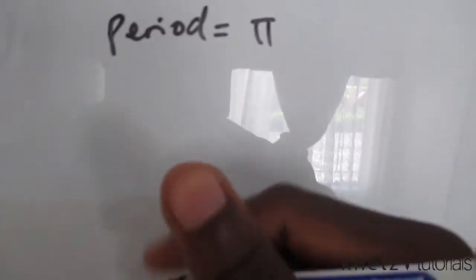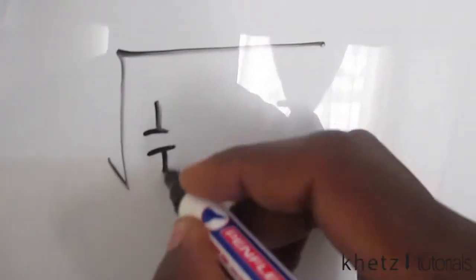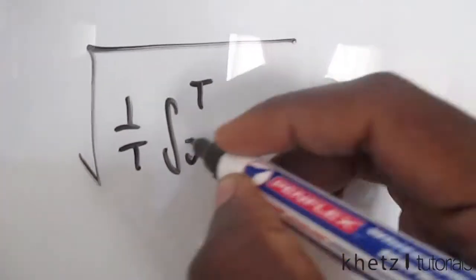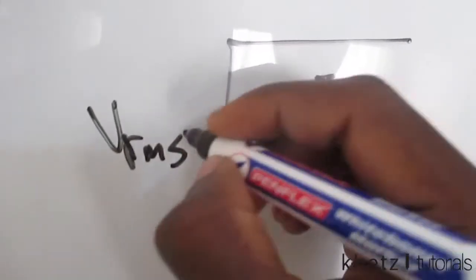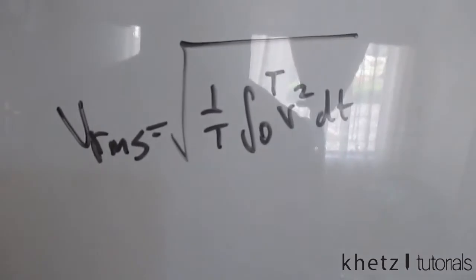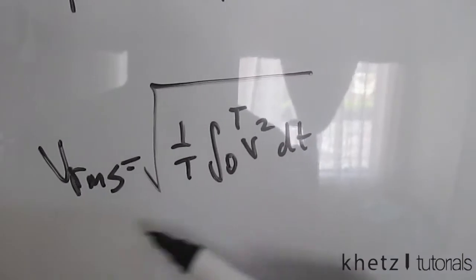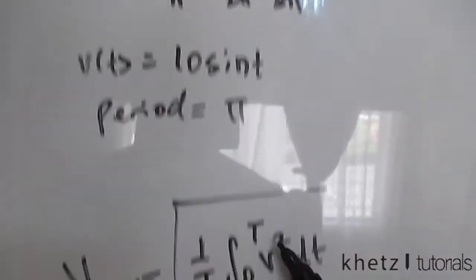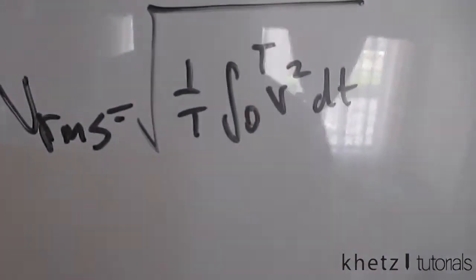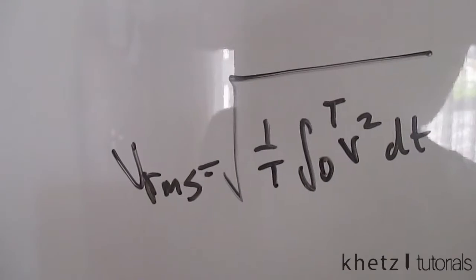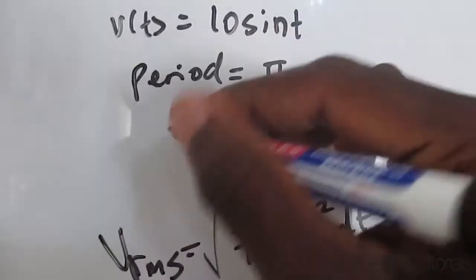You're asked to find the RMS value of the voltage. RMS means root mean squared, so you're going to have a root, a mean, and something squared. The second part says we have to calculate the average power dissipated in the six ohm resistor.